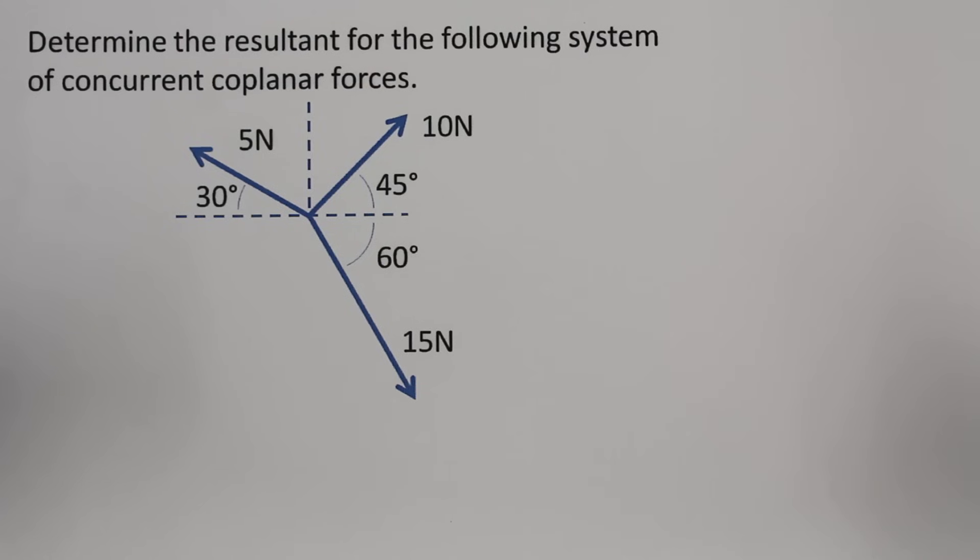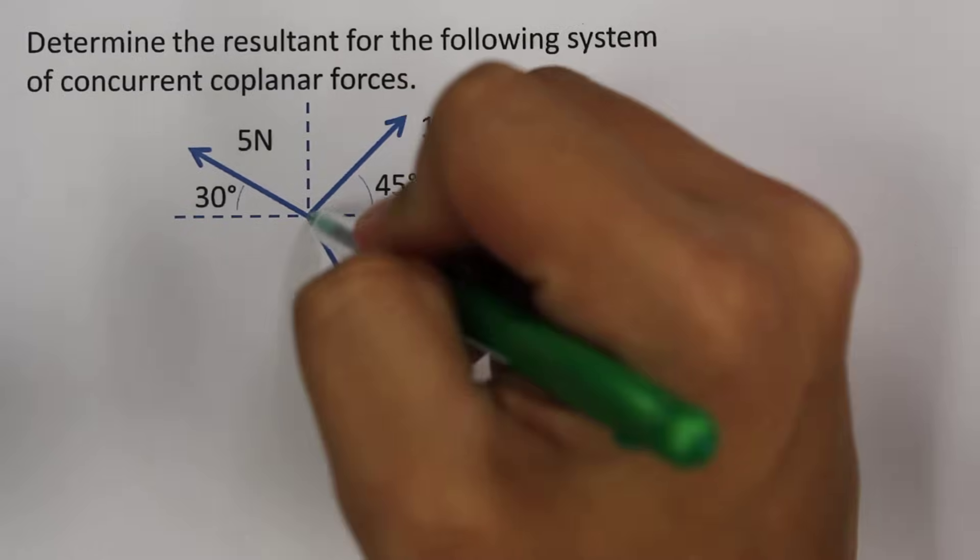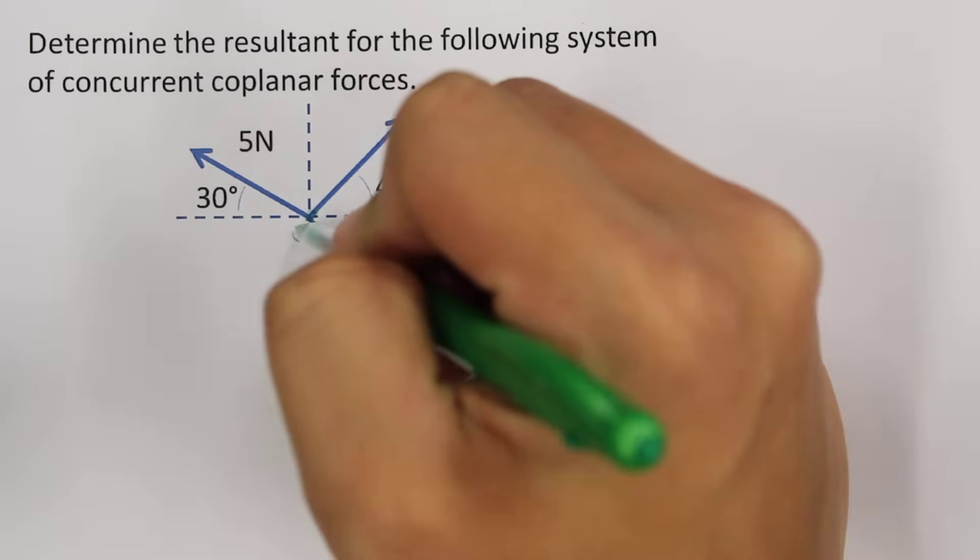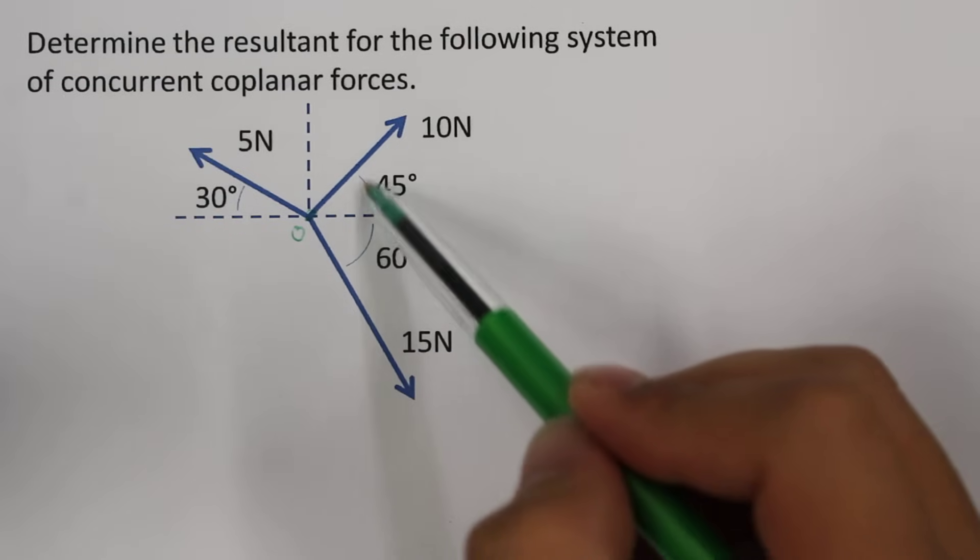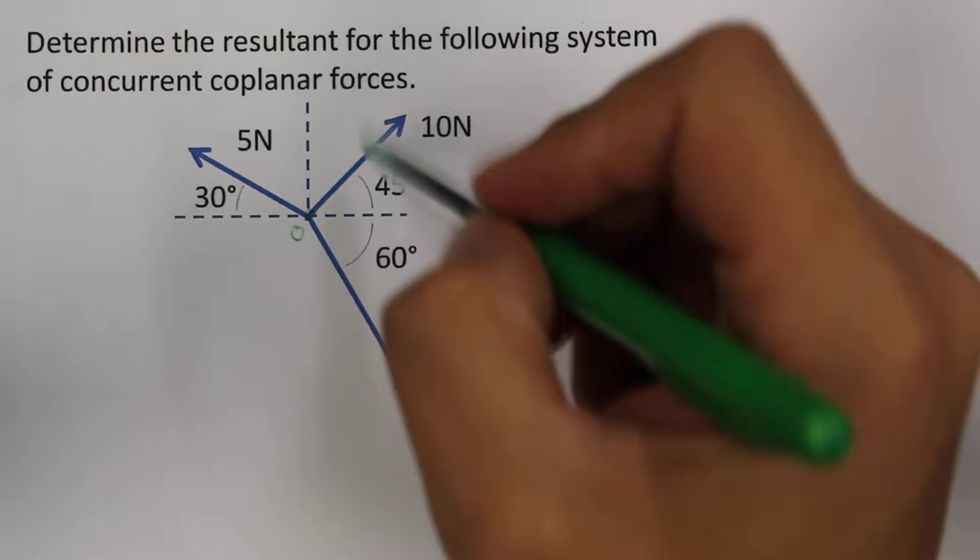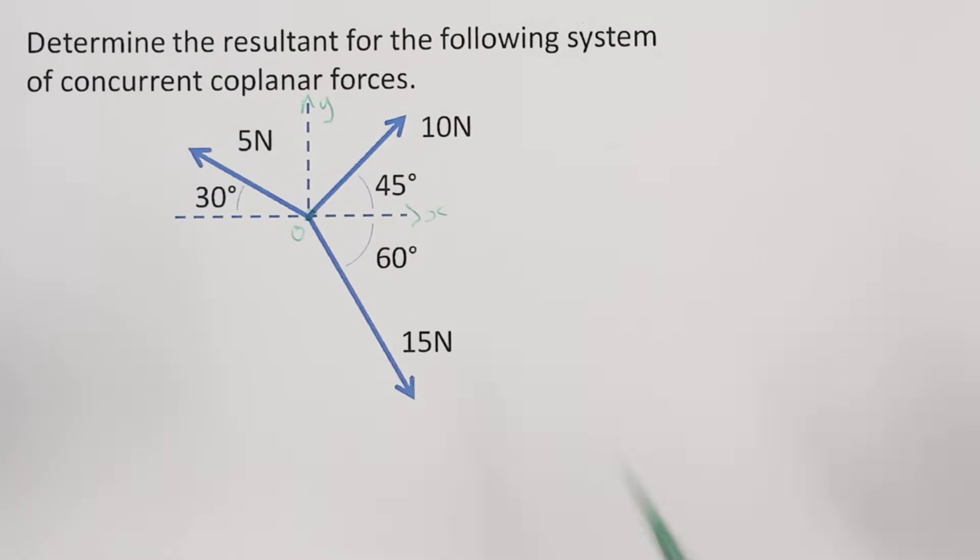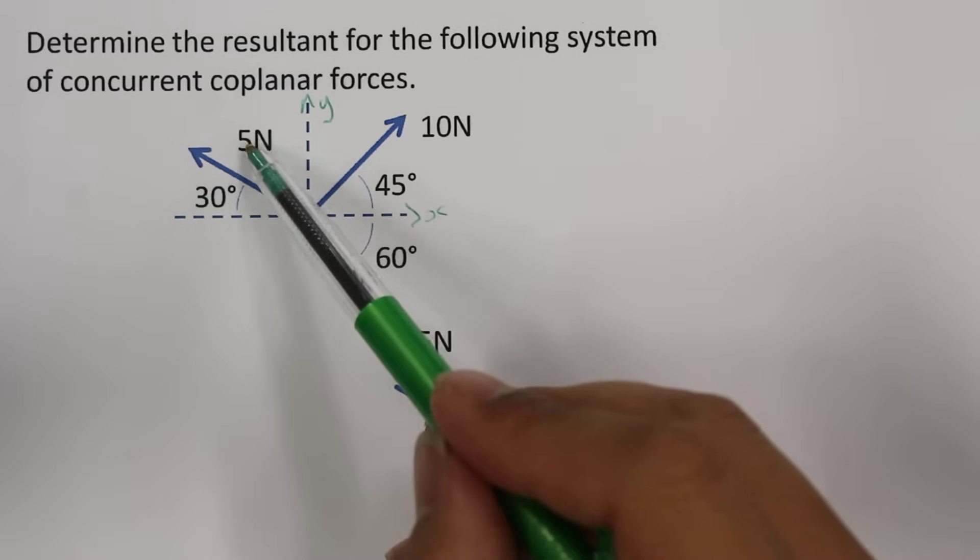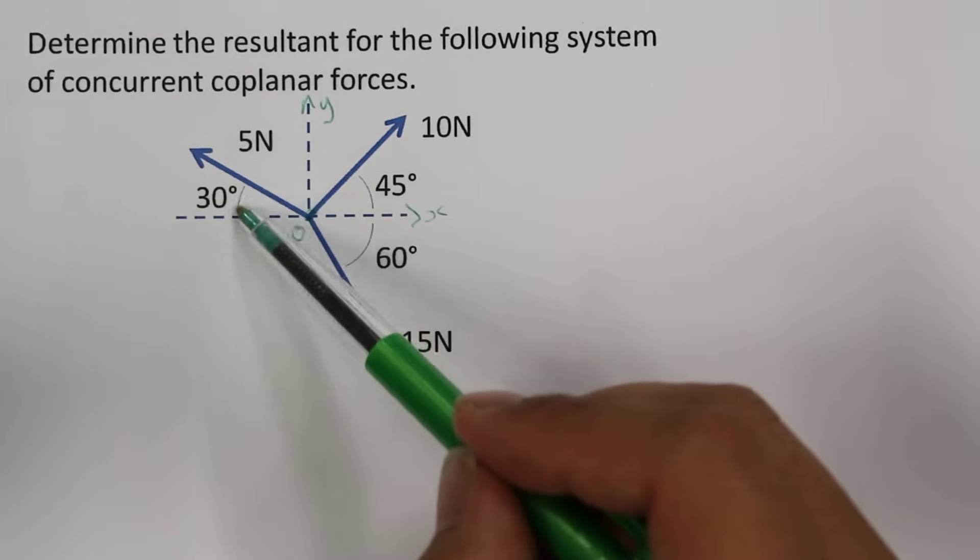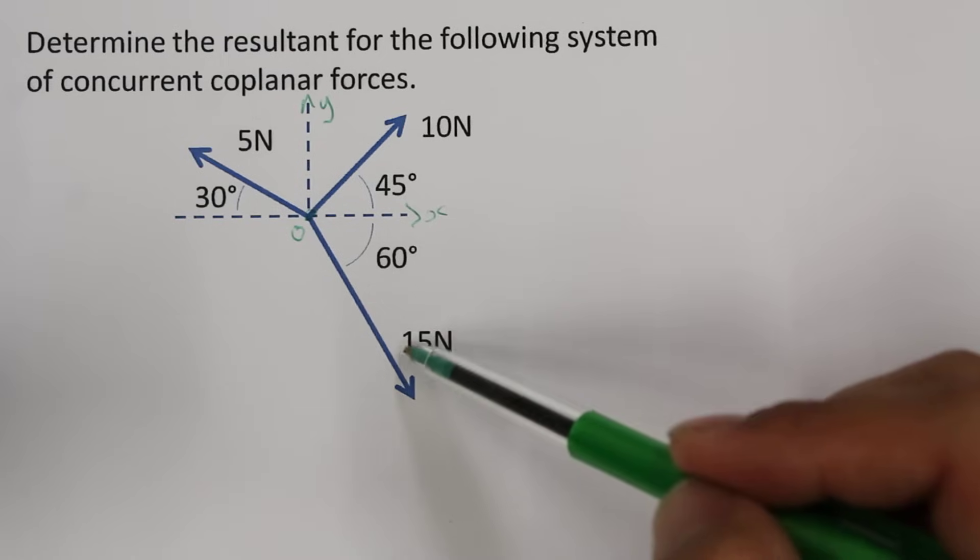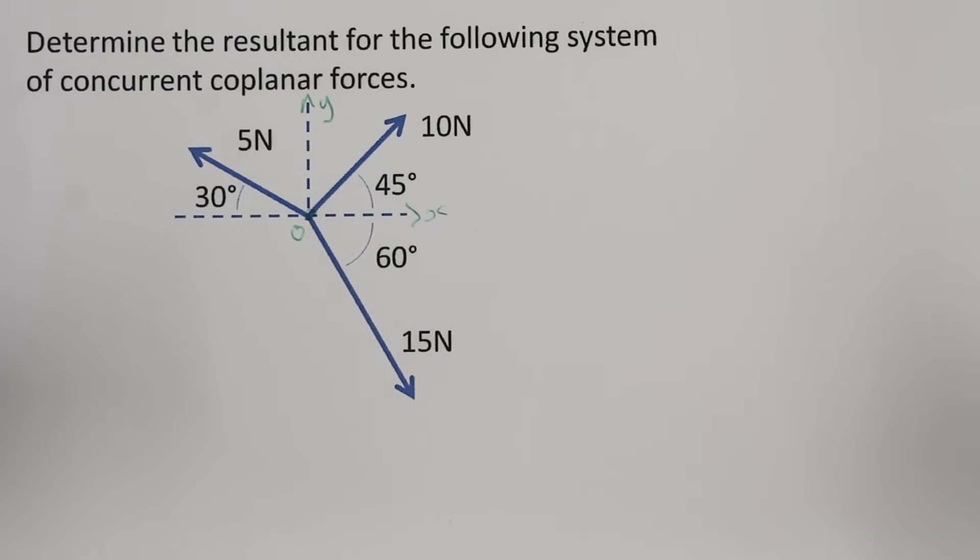What we have here is three forces that act at one single point, we could call that point O. We see a 10N force at 45 degrees from the horizontal, if this was the x-axis and this is the y-axis. We have a 5N force acting 30 degrees from the negative x-axis and a 15N force acting at an angle of 60 degrees from the positive x-axis.